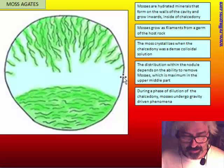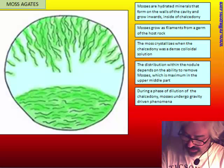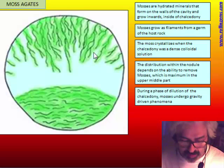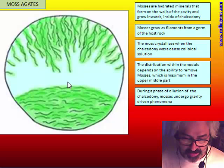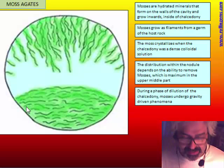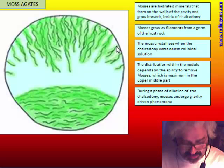The colloidal solution is so dense that the filament can float — it is frozen inside and can stay in the middle until the chalcedony hardens. But if there is a phase of dilution — some water arrives — the colloidal solution becomes more diluted and the filaments of moss can be driven by gravity and fall down. The presence of a mound at the base indicates there was a phase of dilution. On the contrary, if all the moss are suspended, floating in the chalcedony, this dilution never arrived.